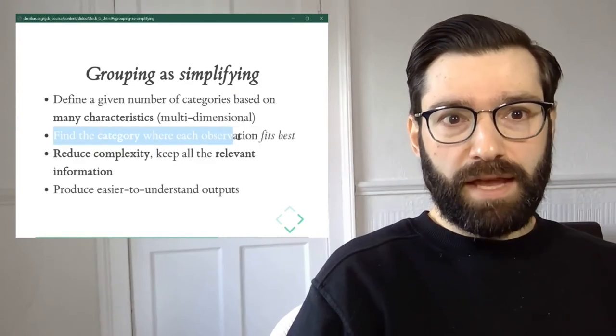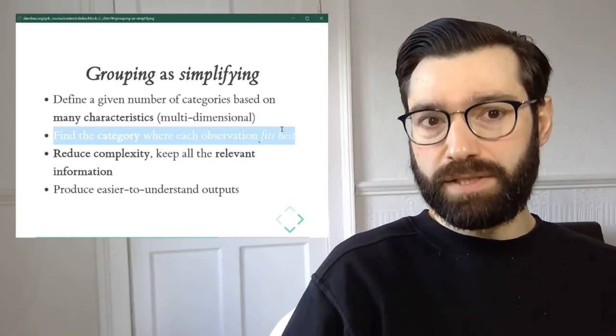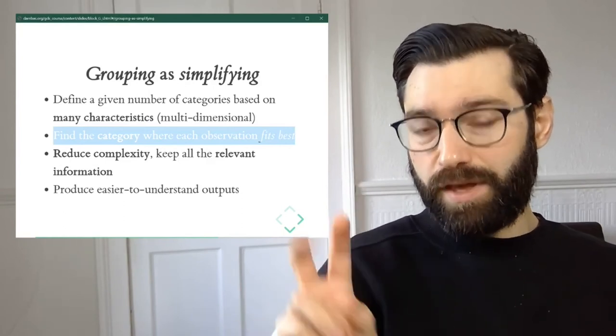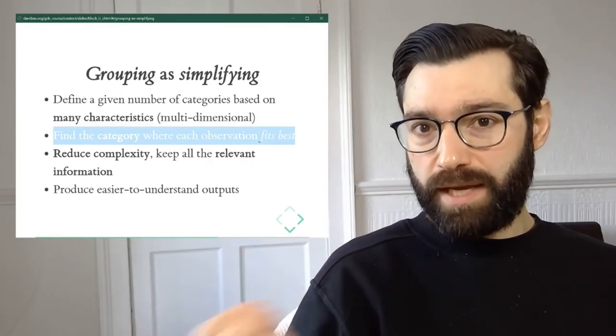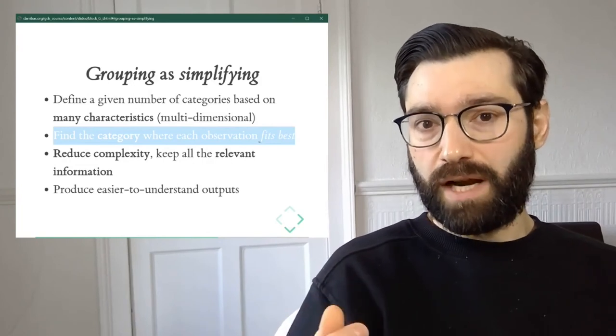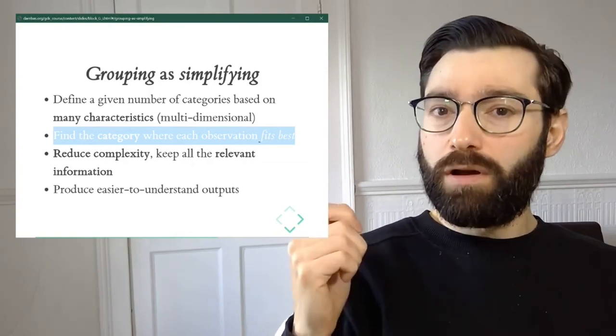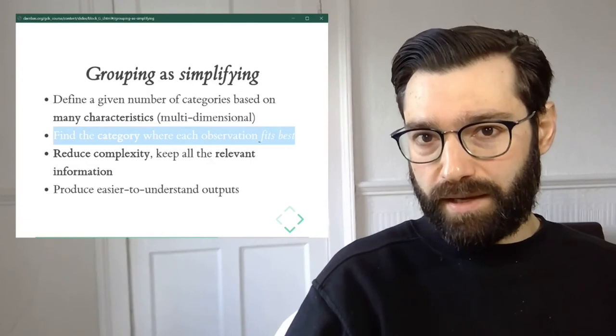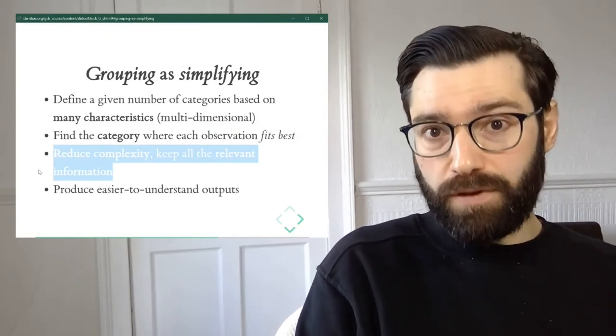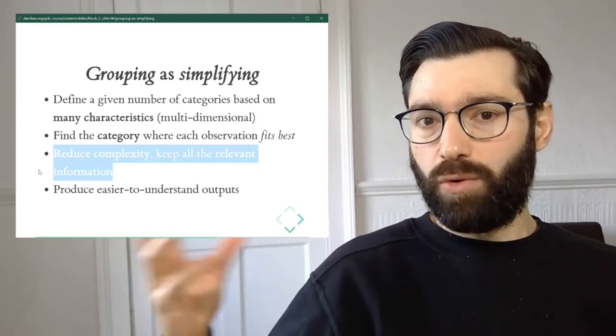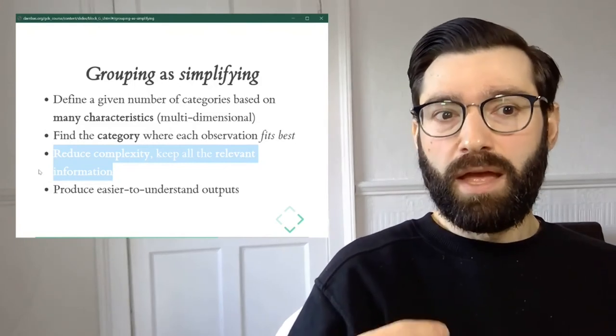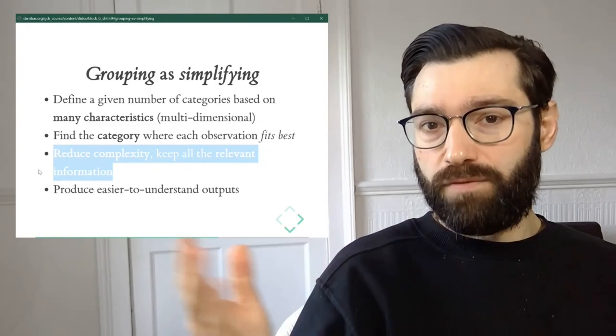What is the goal? The idea is to find the category for which each observation fits best. When we perform clustering, we're doing two things. One is defining the classes, the categories into which our data set are going to be assigned. And at the same time, we're also assigning every observation in our data set into one of these categories. By doing this, we can reduce the complexity because we're going to move from a situation where we have a potentially large number of variables into a single one.